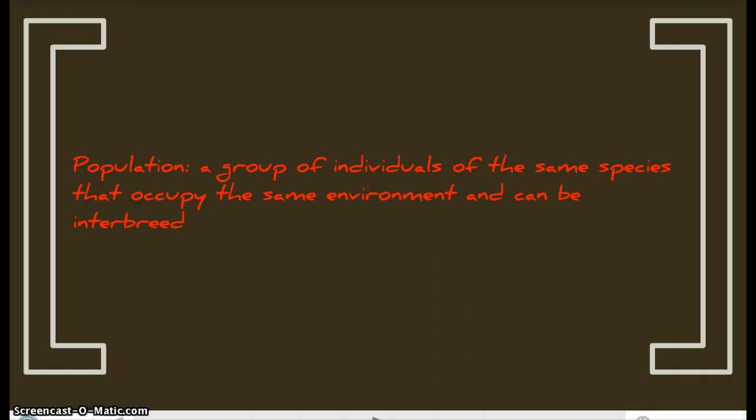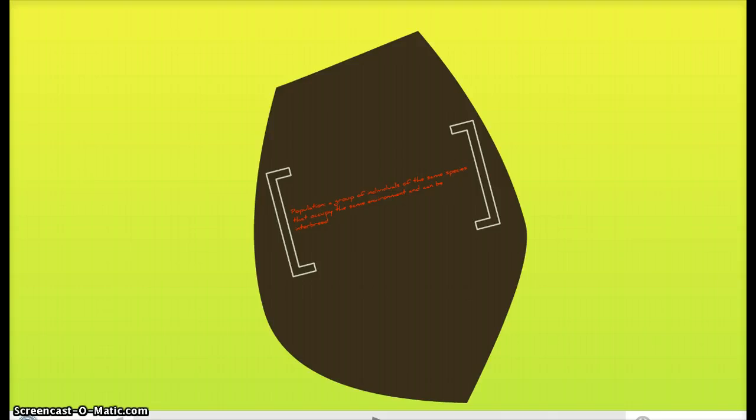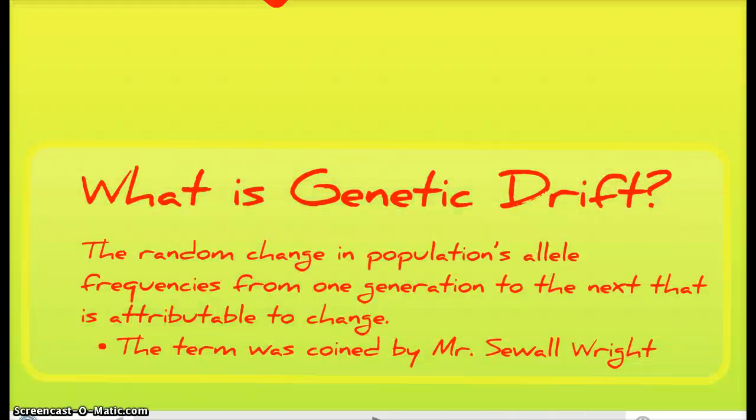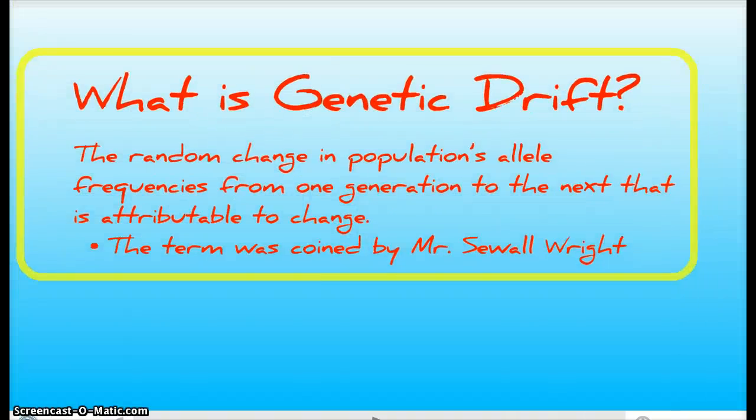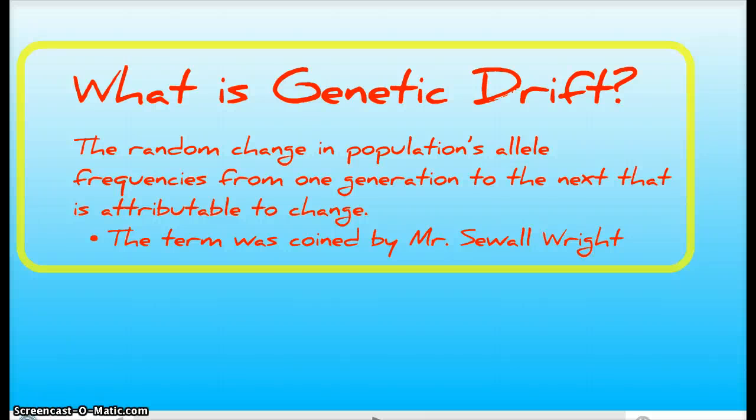So moving right along, what is genetic drift? Genetic drift is the random change in the population's allele frequencies from one generation to the next attributed to chance. Pretty much the frequency changes as you just heard from the definition. It can either go up or down.